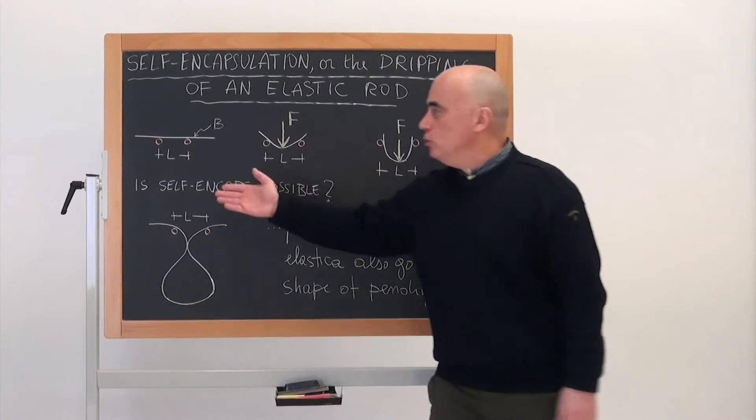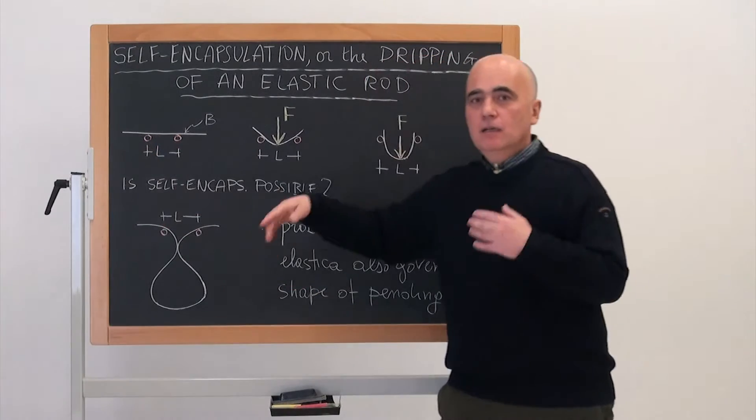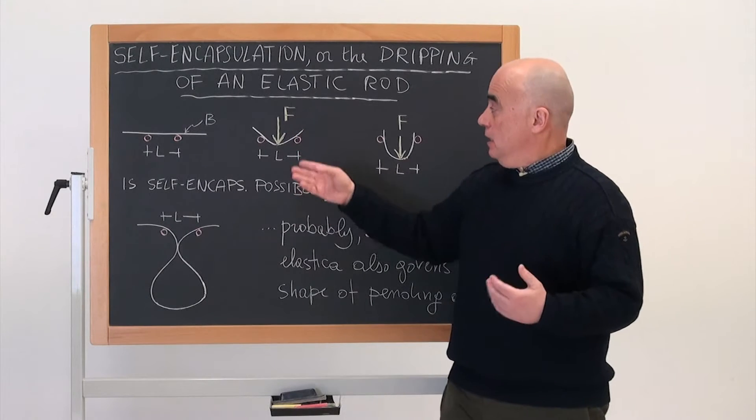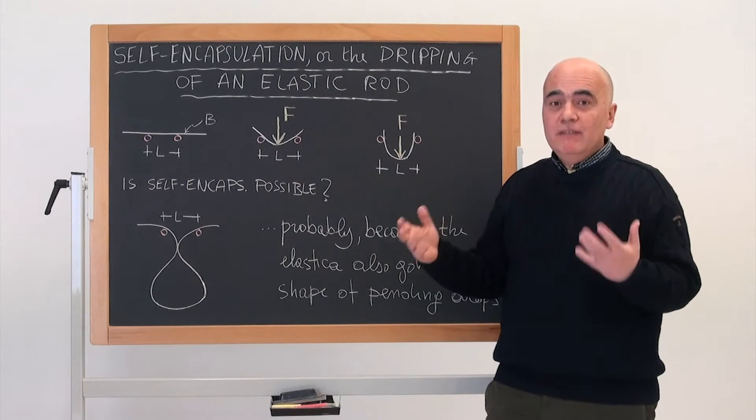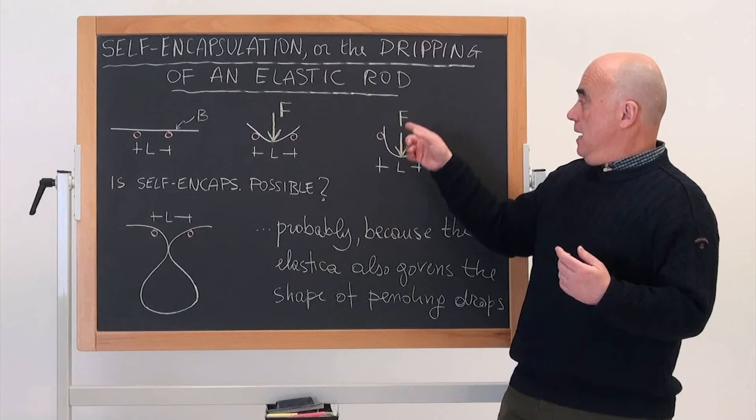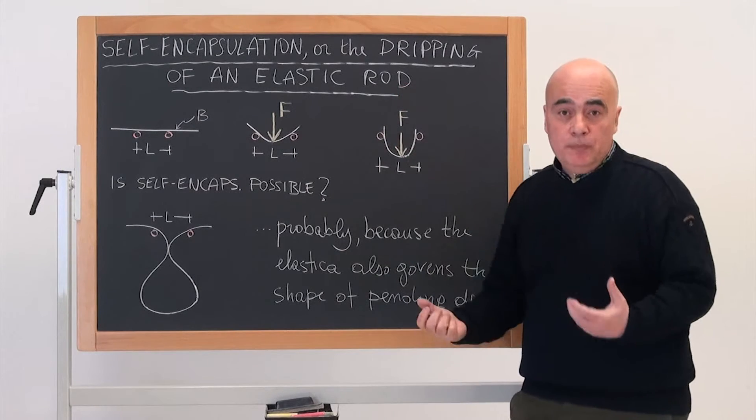We consider an elastic rod of bending stiffness B covering a fixed span L. This rod is loaded transversally with the force F. If these are two simple supports, at a certain load the elastic rod will simply slip down.